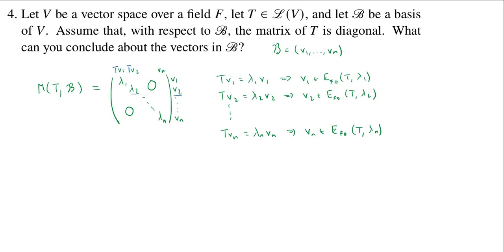So, the question is, what can we conclude about the vectors in B? They're all eigenvectors. So, the vectors in B are eigenvectors for T.